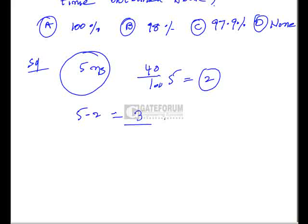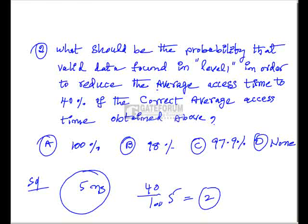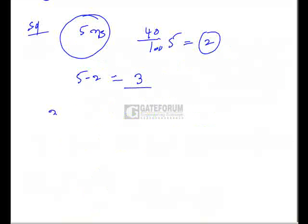For that what should be the hit ratio? That means what should be the probability that valid data found in the level 1 cache. That means average access time 3 is equal to x. Let it be x, probability of finding the valid data in level 1. That is x percentage of the time it will be 2 nanoseconds, plus remaining 100 minus x percent of the time it will be 102.